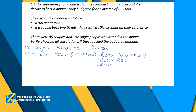Then you take 86 times 180 and we get a total of 15,480 rand received from ticket sales to the 86 couples. So the total received is: from singles, 10,200, plus from couples, 15,480. Adding those together we get a total of 25,680 rand.